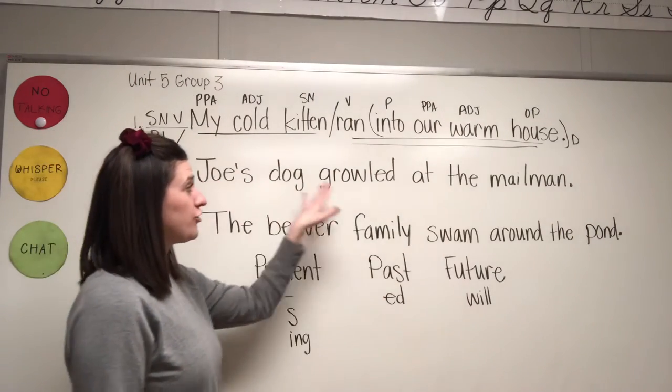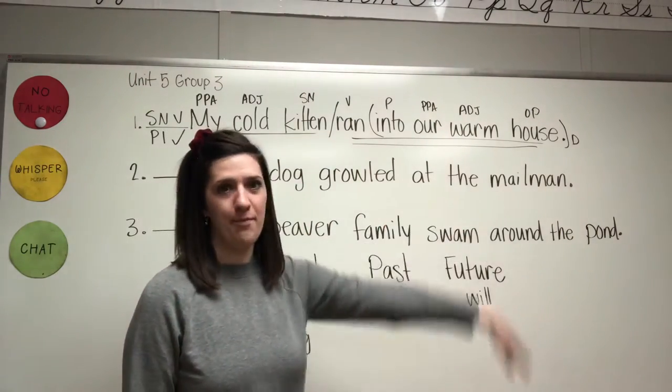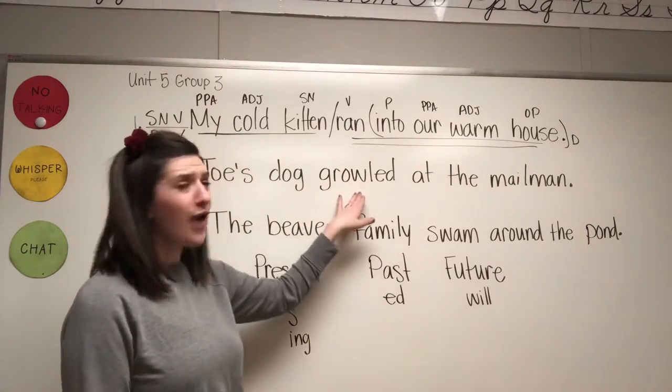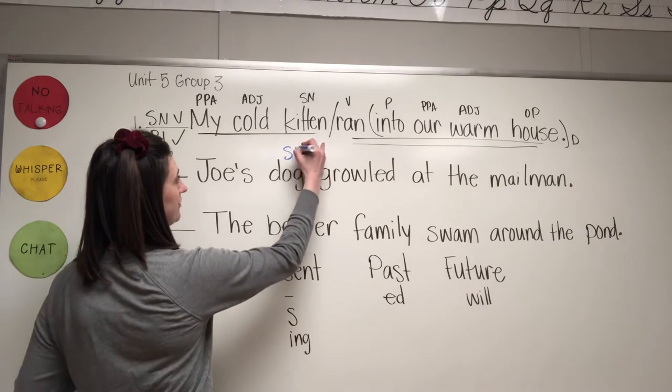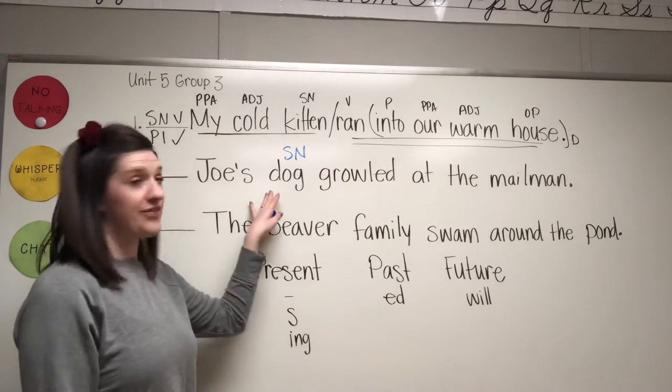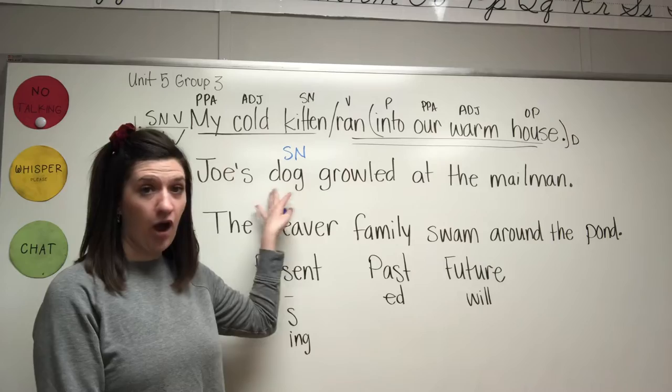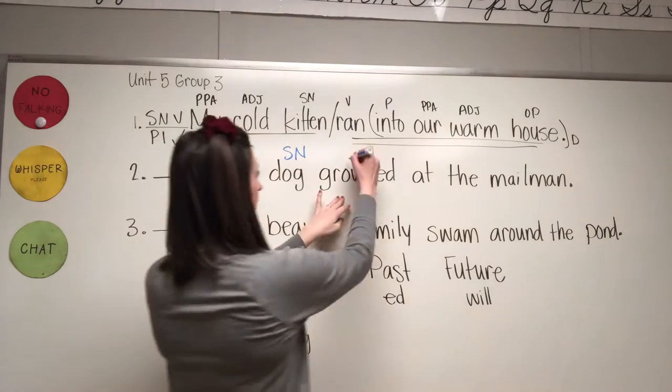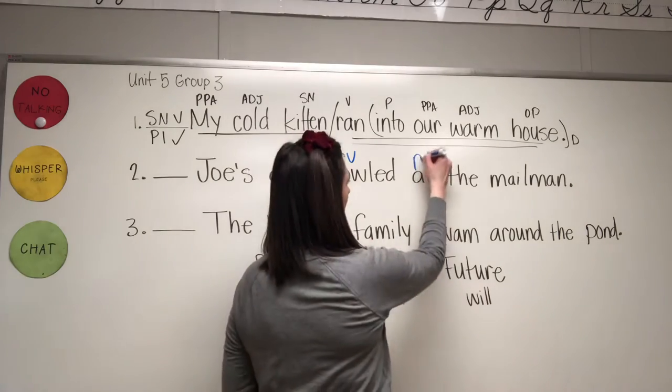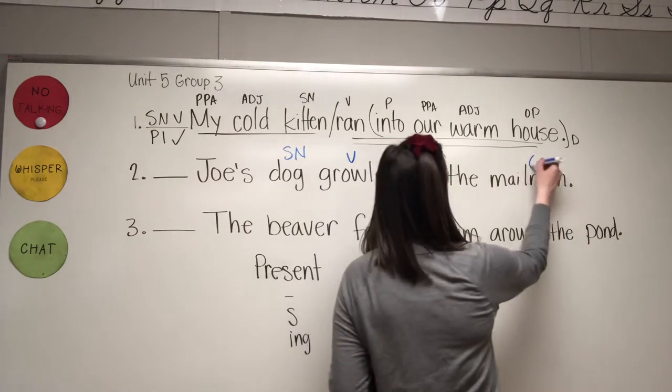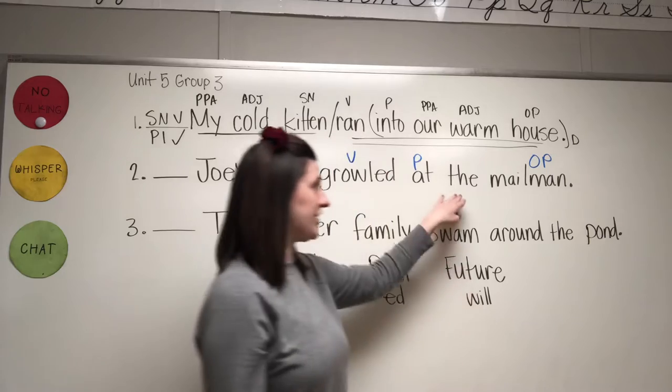Joe's dog growled at the mailman. What growled at the mailman? Dog. Subject noun. What is being said about dog? Dog growled. Verb. At. Preposition. At what? Mailman. Object of the preposition.